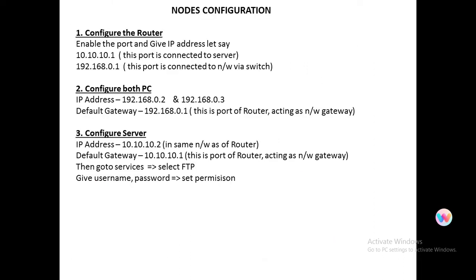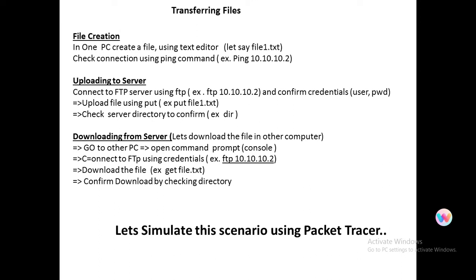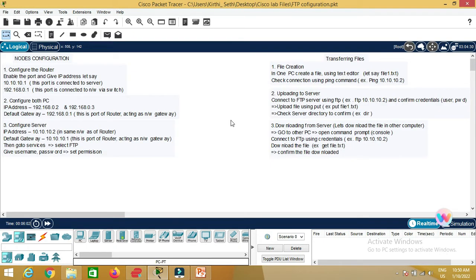In our topology we are having a router, two PCs, and a server. These are the configurations we are going to use in our setup. After doing the configuration, we are going to create a file in one PC, upload it to the server, and then download the same file from the server to the other machine. All these steps have already been copied into the Packet Tracer environment so we can walk through them.